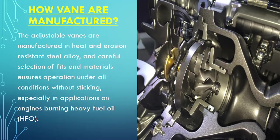How are these vanes manufactured? The adjustable vanes are manufactured in heat and erosion resistant steel alloy. Careful selection of fit and materials ensures operation under all conditions without sticking, especially in applications on engines burning heavy fuel oil. So if anyone asks what material the vanes are made from: heat and erosion resistant steel alloy.